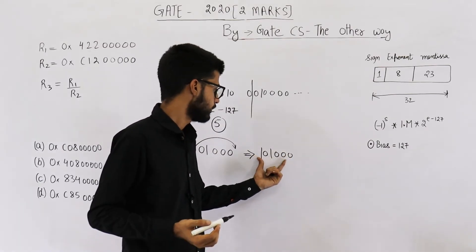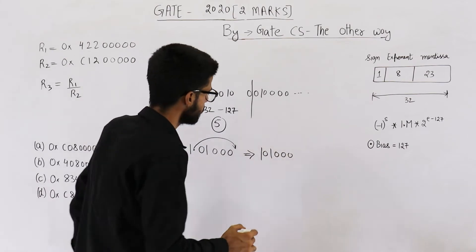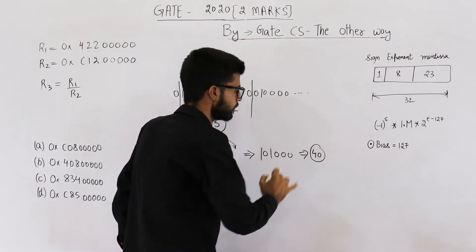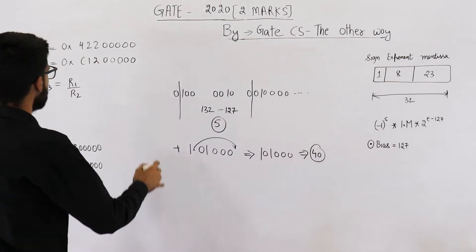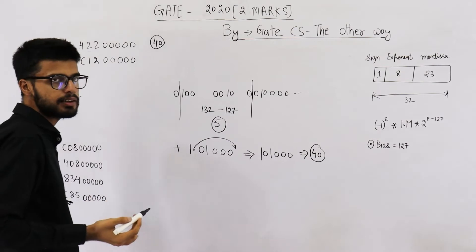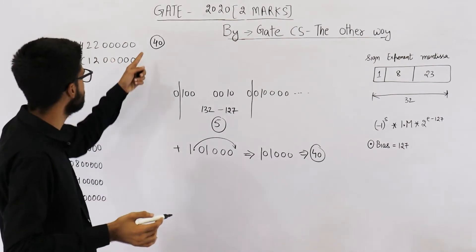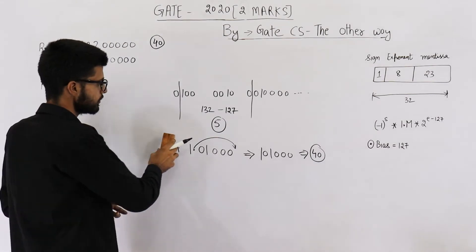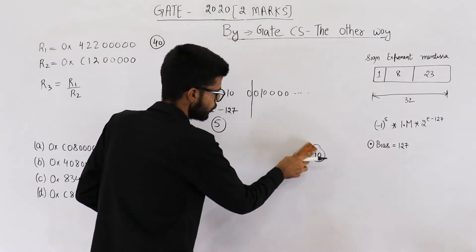This number comes out to be 101000, which will be 20 into 2. So this number is actually 40. That means R1 is containing a value 40 which is represented in single precision as this. Now let us see what is the value saved in R2.